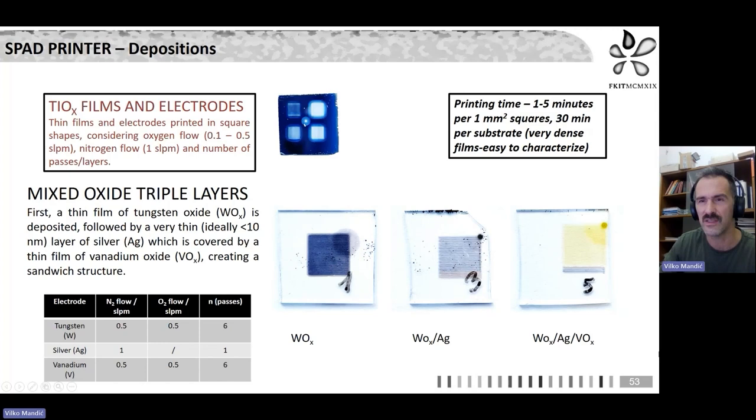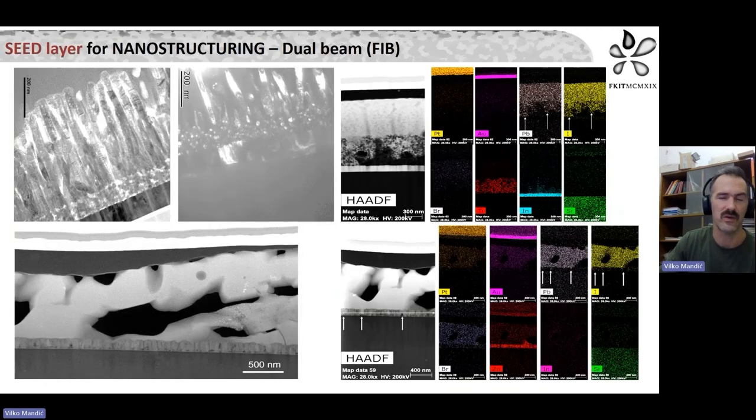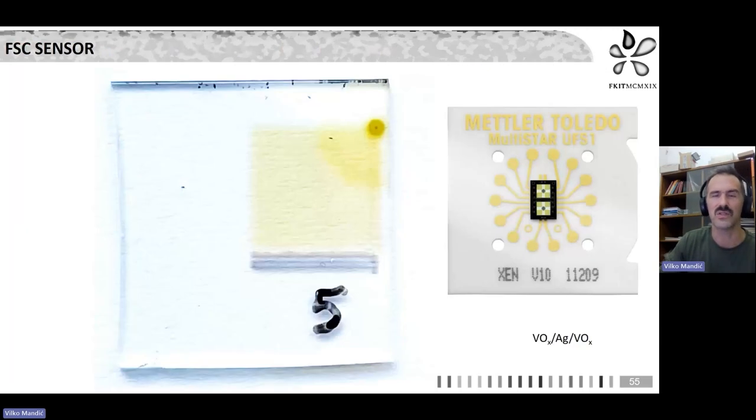So we have a very, where is it, a very dot, which is kind of a reference. We start with printing from here. And that dot, okay, it's there, actually can be very useful for Flash DSC characterization.